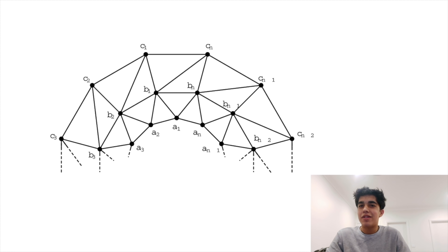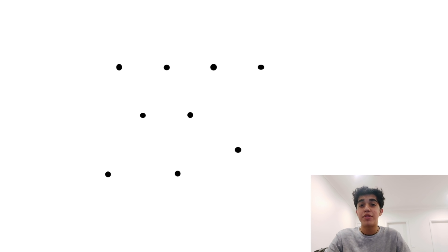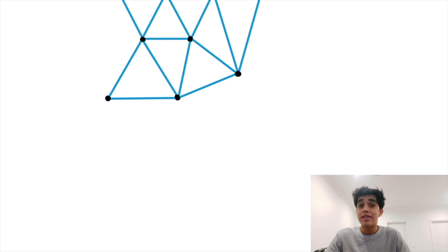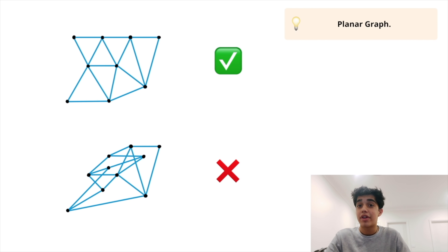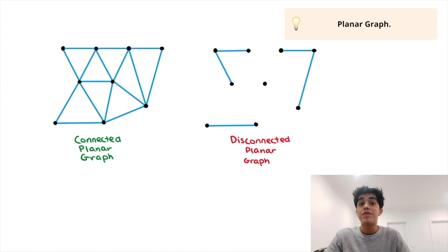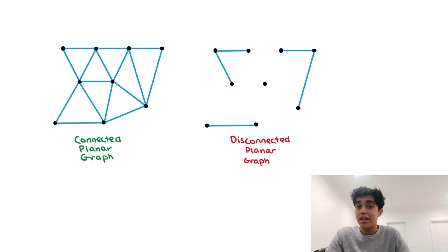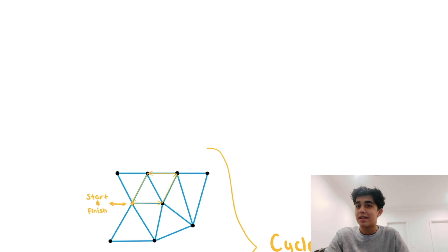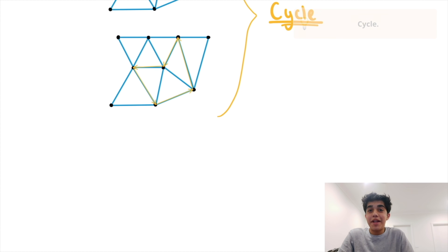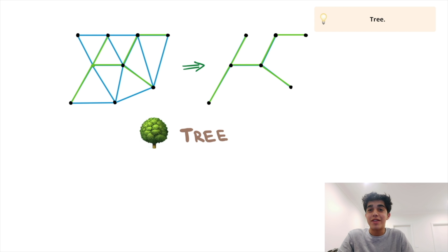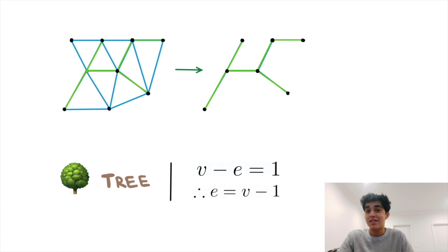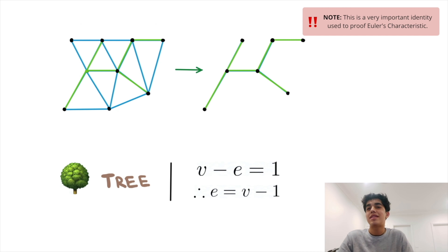To prove Euler's characteristic, we need some key definitions. We can reframe convex polyhedra in terms of planar graphs. If we draw dots and connect them with lines that don't intersect, that's a planar graph. A planar graph is connected if there is a path between every pair of vertices. A cycle is a path starting on any vertex that returns to the same starting vertex. A planar graph without any cycles is known as a tree, which has only one face — the entire surrounding plane — so Euler's characteristic reduces to: edges equals vertices minus one.